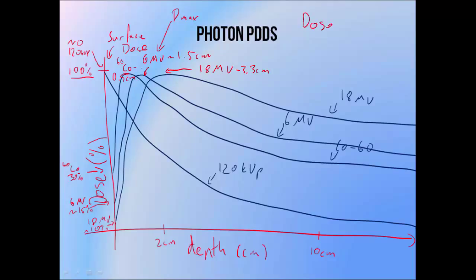The amount of dose delivered at depth also varies with beam energy, which is one of the main reasons why we're interested in treating with higher energy beams. At a depth of 10 cm, a 120 kVp beam only delivers about 21% of its maximum dose. Cobalt-60 delivers about 55%, 6 MV about 67%, and 18 MV about 80%. So if we're interested in treating deep structures whilst delivering a lower dose to structures lying above, a higher energy beam is a good idea.